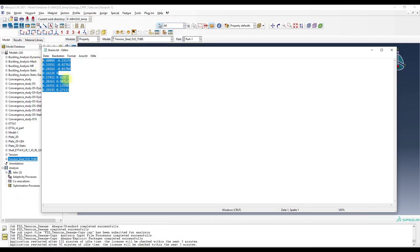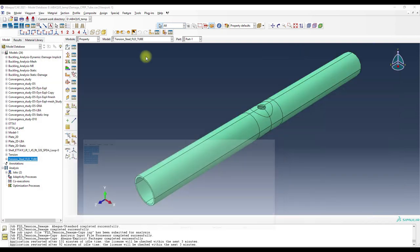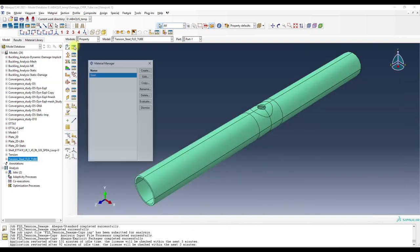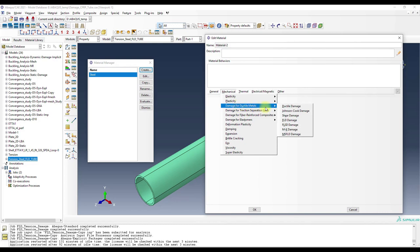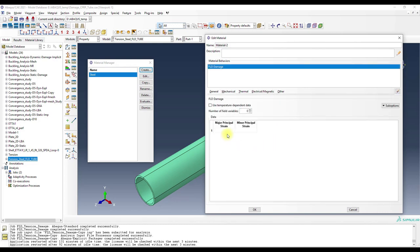Here are the values from the presentation. And then we go to the property module. Then basically create a new material, Mechanical, and then here damage for ductile metals and FLD damage. And then we just paste here the values.